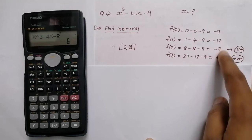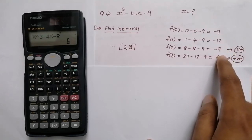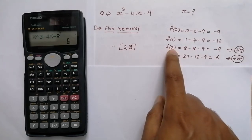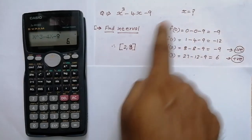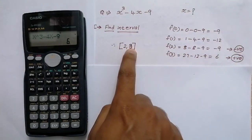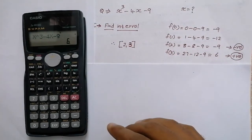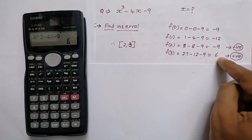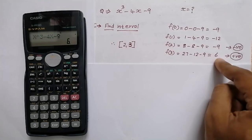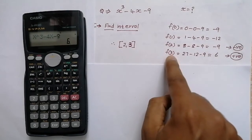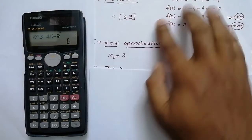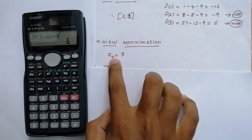We are looking for consecutive negative and positive values — that is where the interval will be lying. Since f(2) is negative and f(3) is positive, our interval will be between 2 and 3. For the initial approximation, we check which value is closer to 0: minus 9 or 6. Since 6 is closer to 0, we approximate X₀ equal to 3.